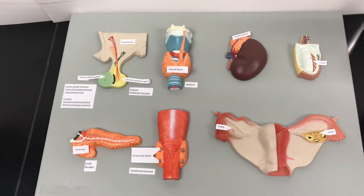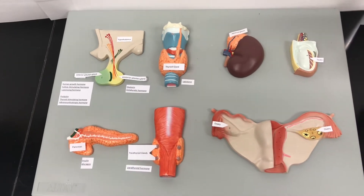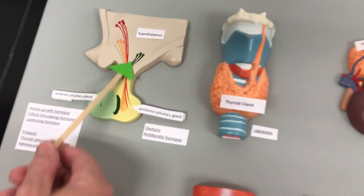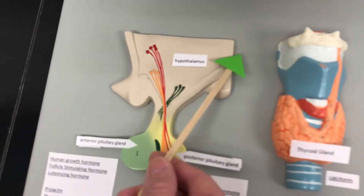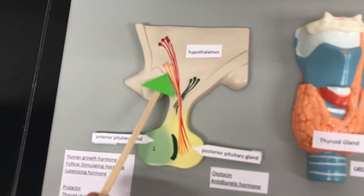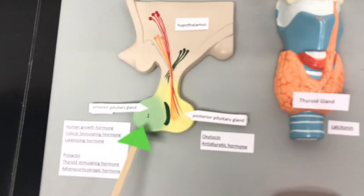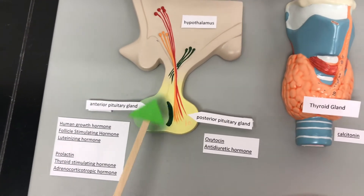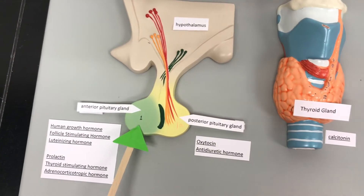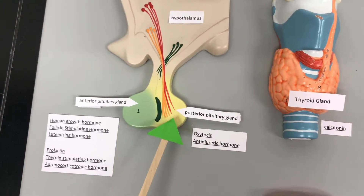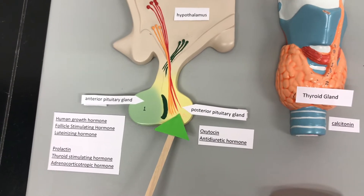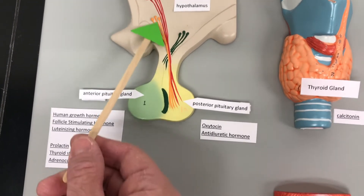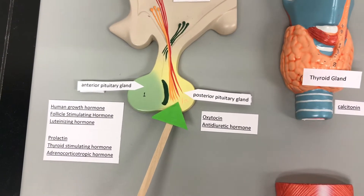This is an introduction to the endocrine system. So this is the hypothalamus — the hypothalamus is in the brain. It communicates with the anterior pituitary gland through the bloodstream, and then it communicates with the posterior pituitary gland through these long axons of neurons.